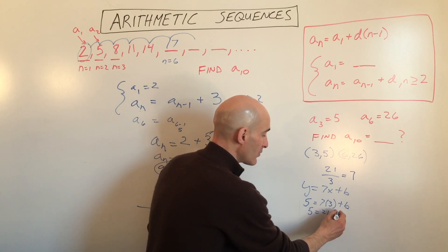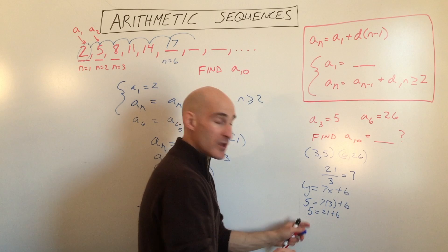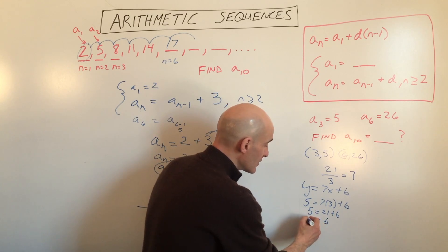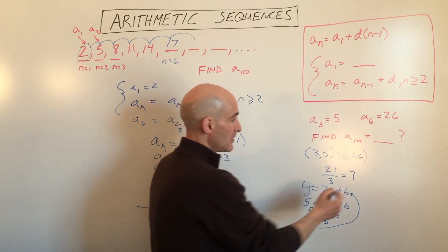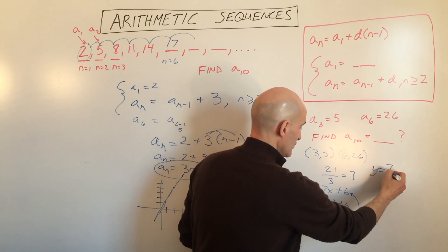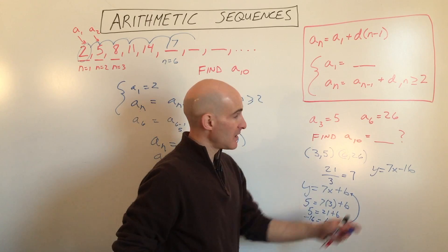So 5 equals 7 times 3 plus b. So 5 equals 21 plus b. Subtract the 21 and b equals negative 16. We're going to put that back in for b. And we've got y equals 7x minus 16.